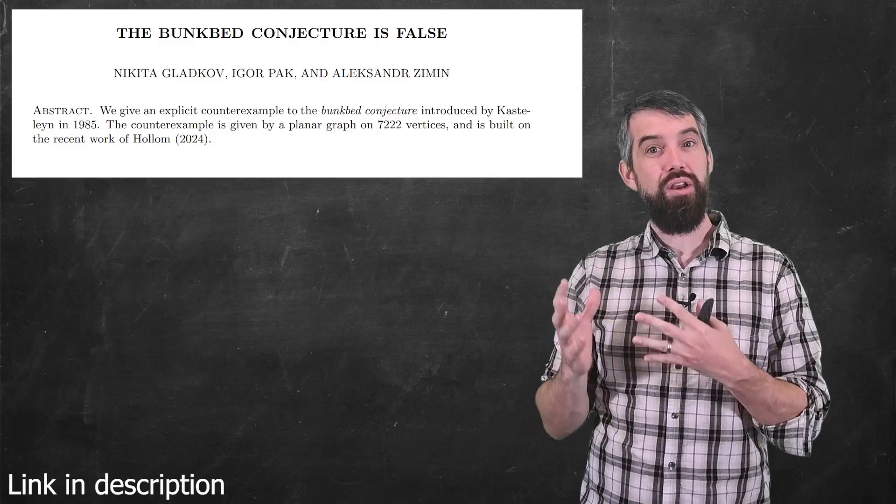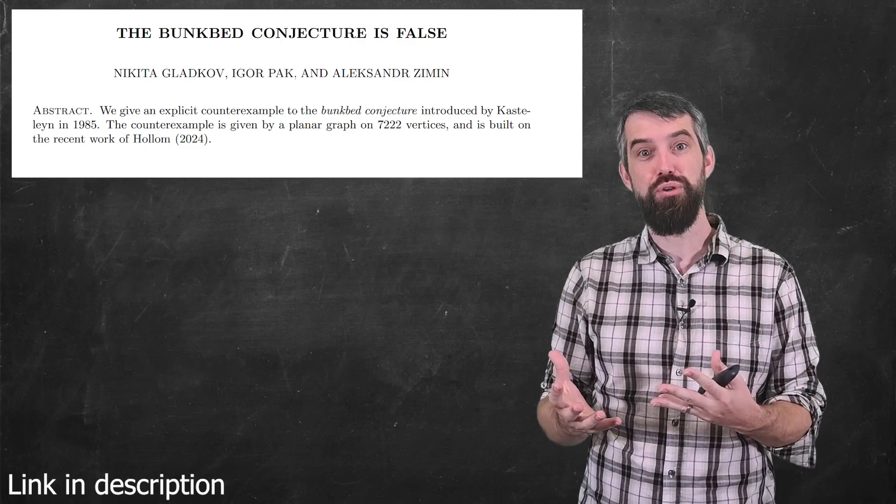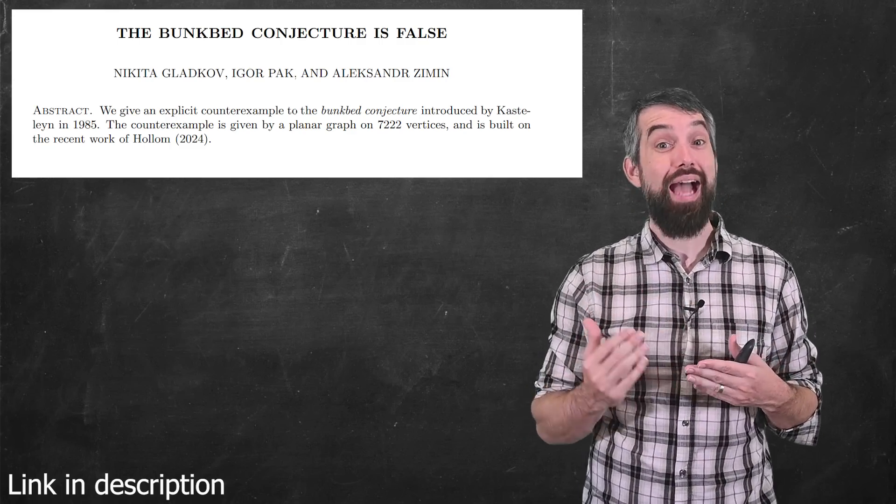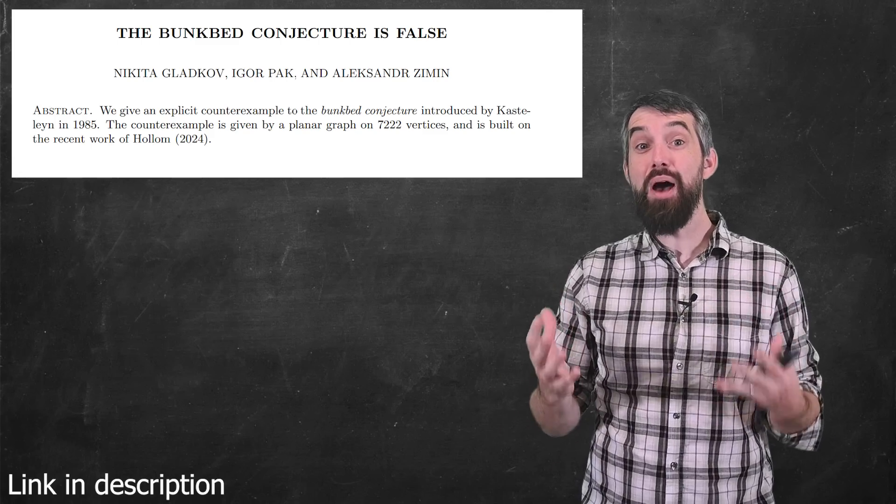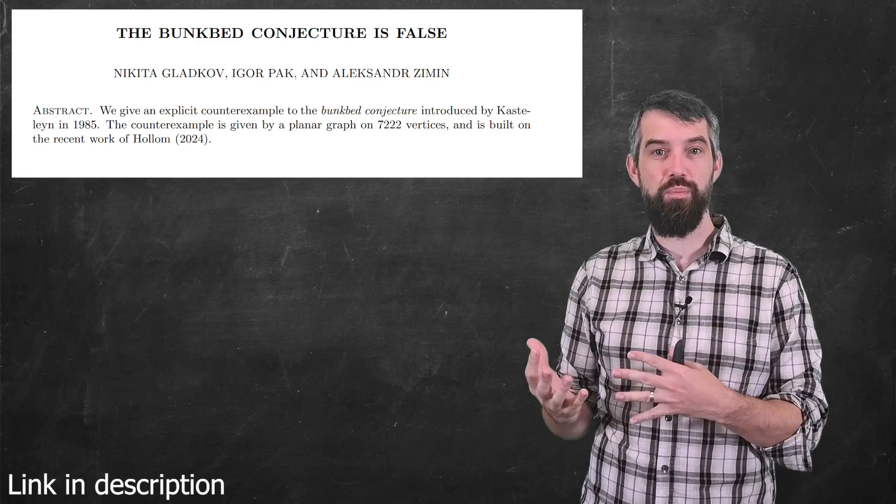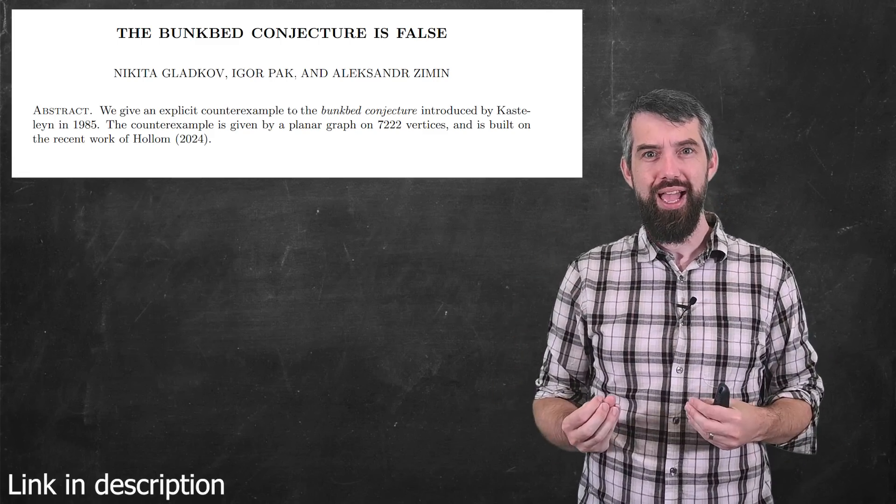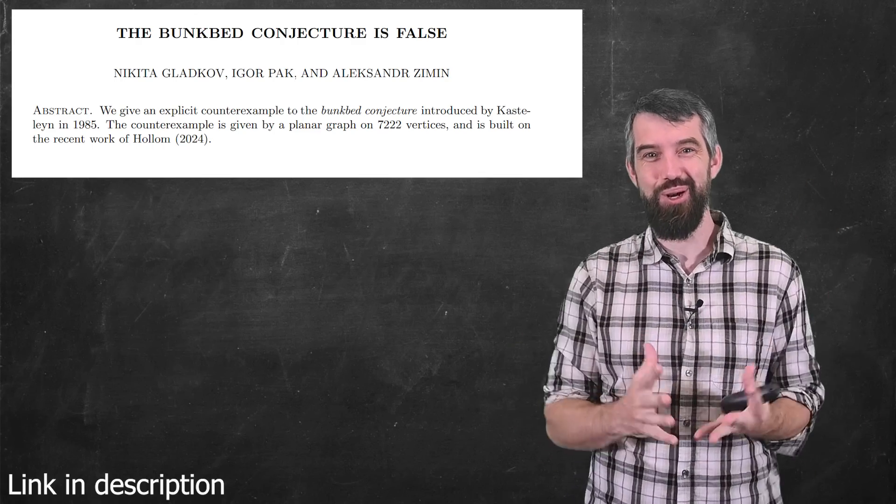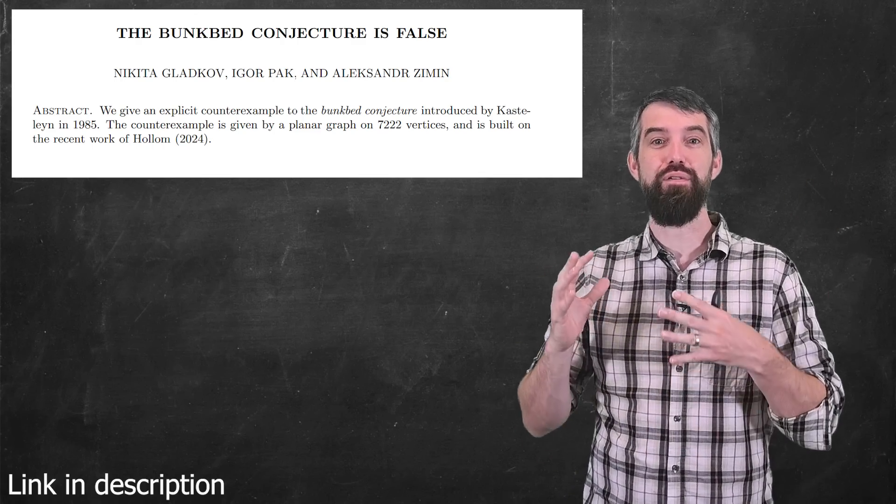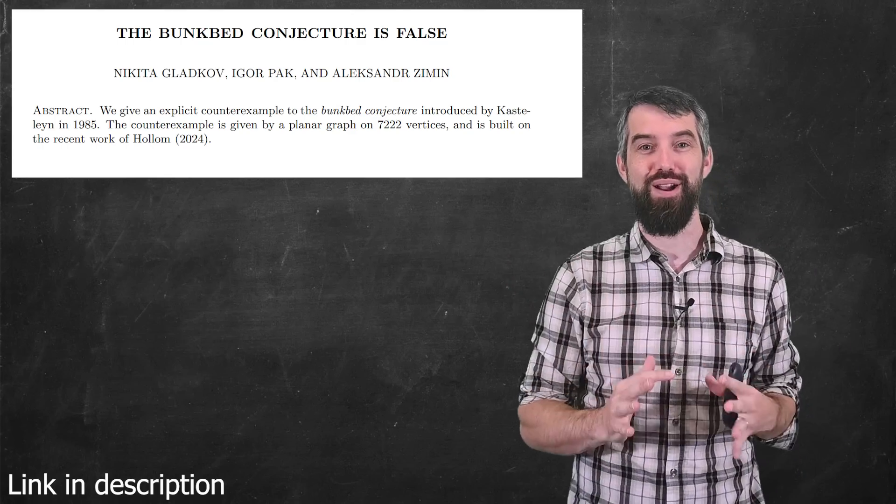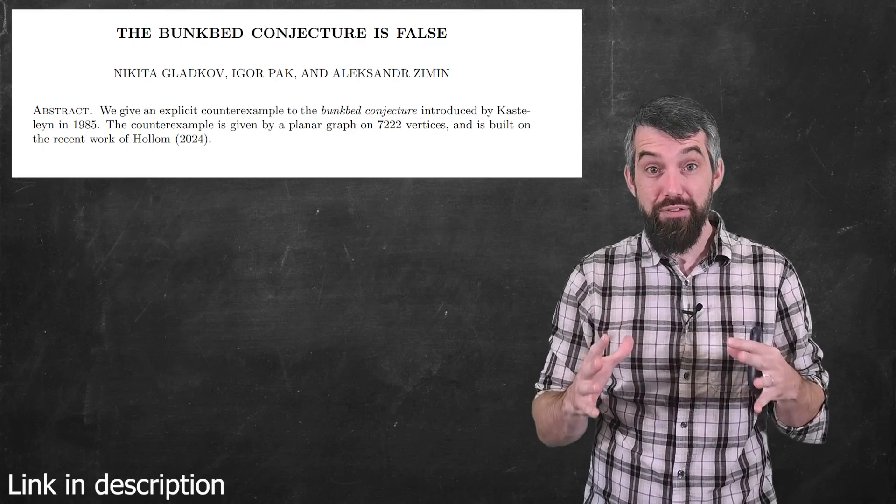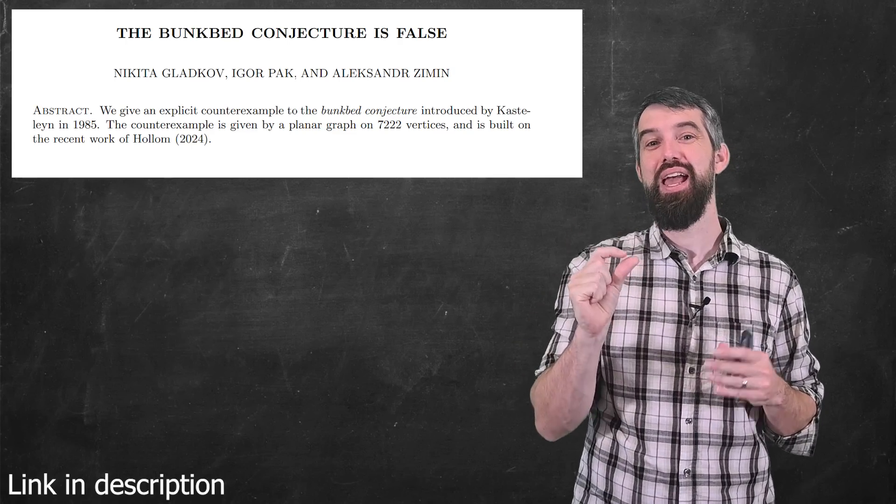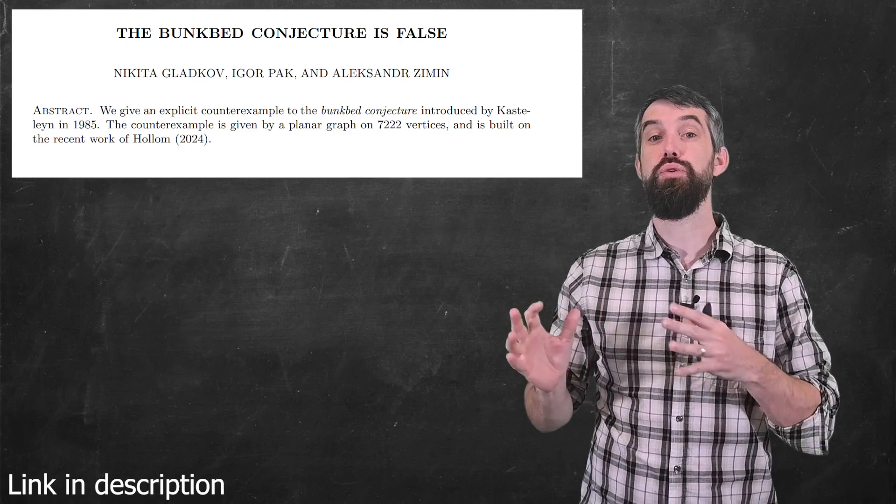When a brand new paper, well, a preprint of a paper, has just been posted on the Mathematics Archive. This paper is by Gladkov, Pack, and Zimmins, and they have come up with a counterexample to this particular conjecture. And it's a huge graph. There is 7,222 different vertices in it. So far, far larger than my little animation that I'm putting up here. But nevertheless, it turns out to be, by the tiniest margin, a counterexample to this claim.